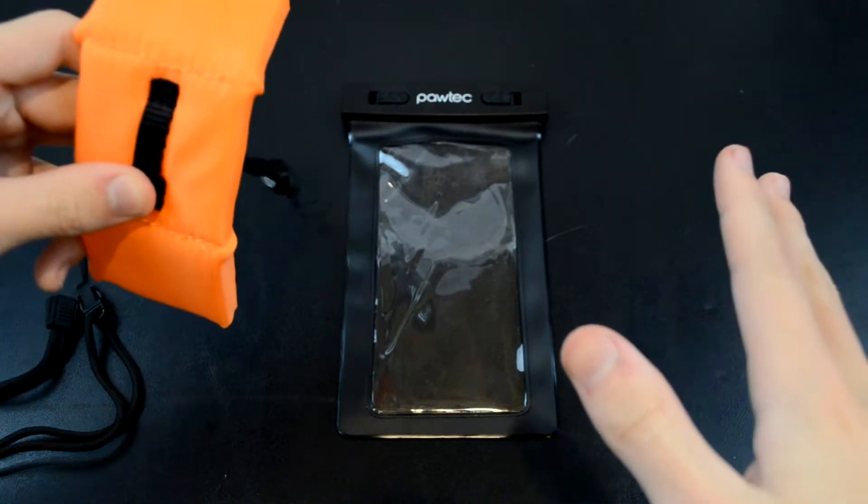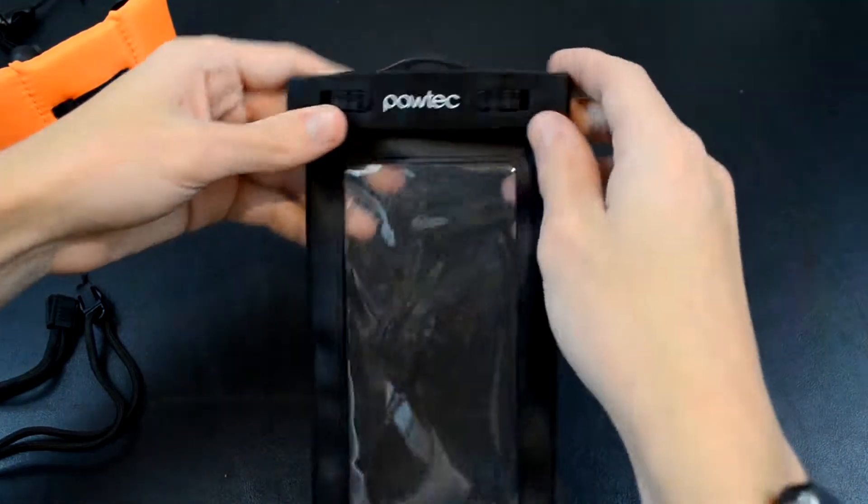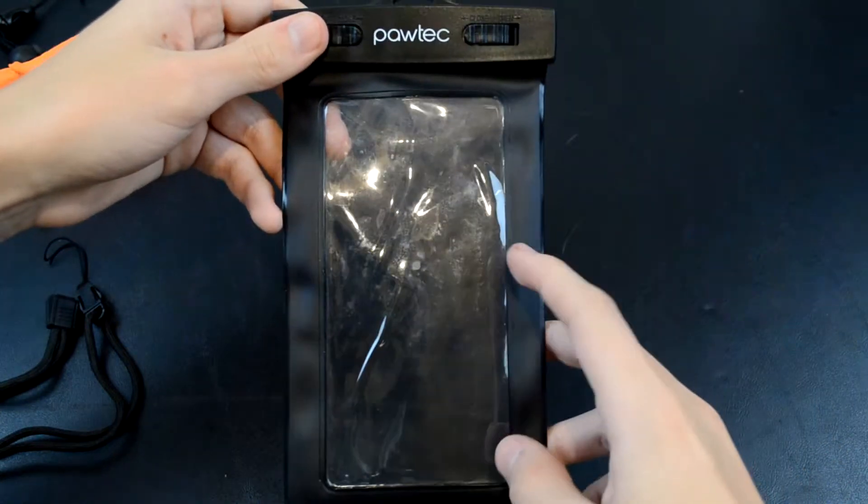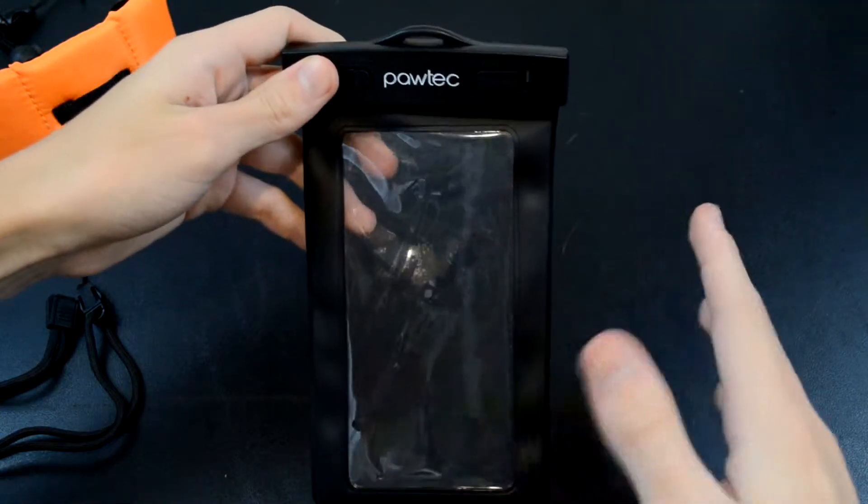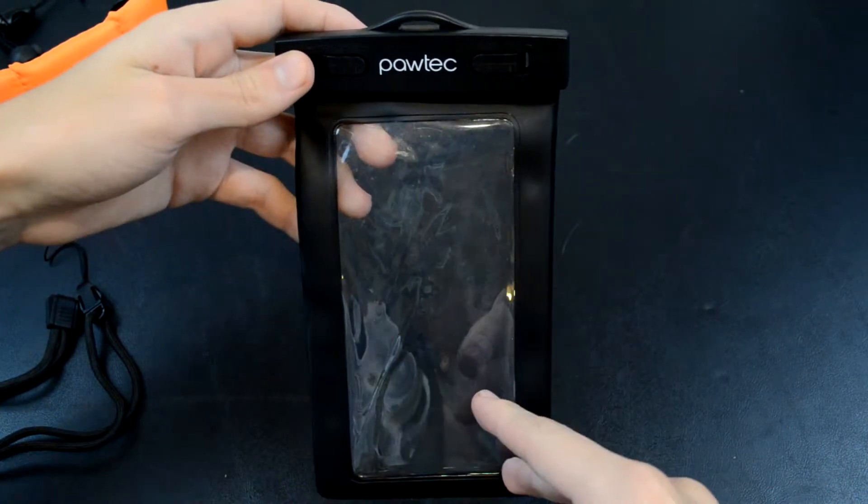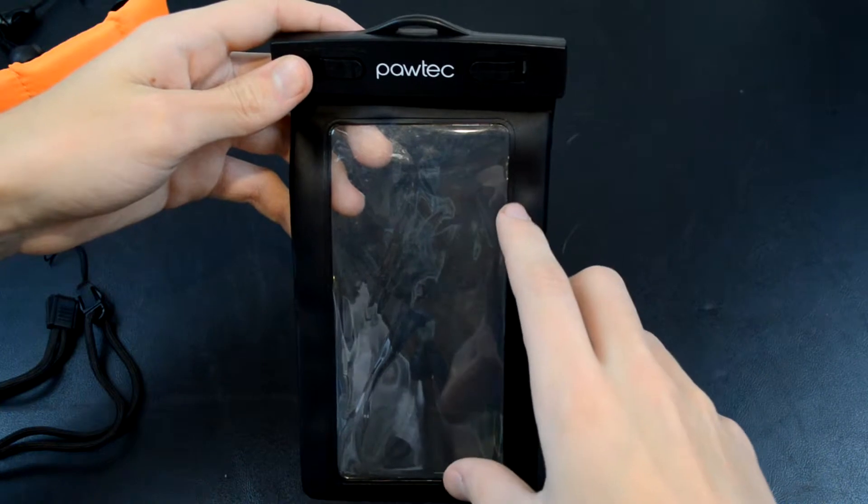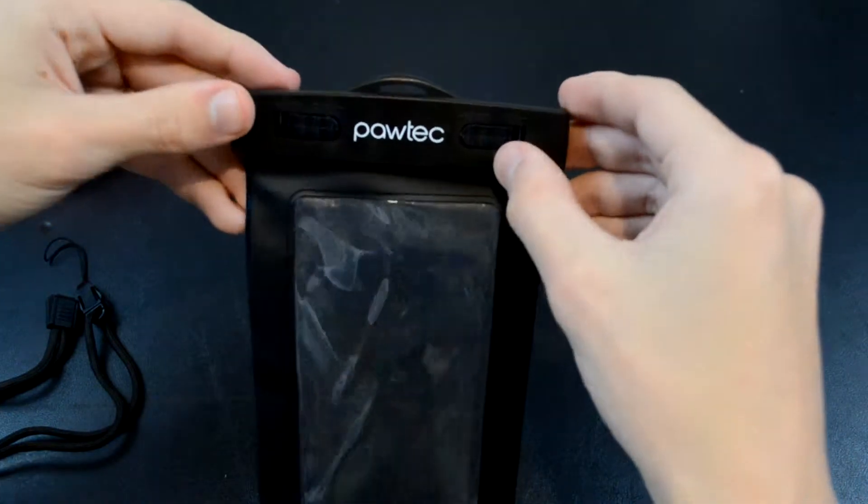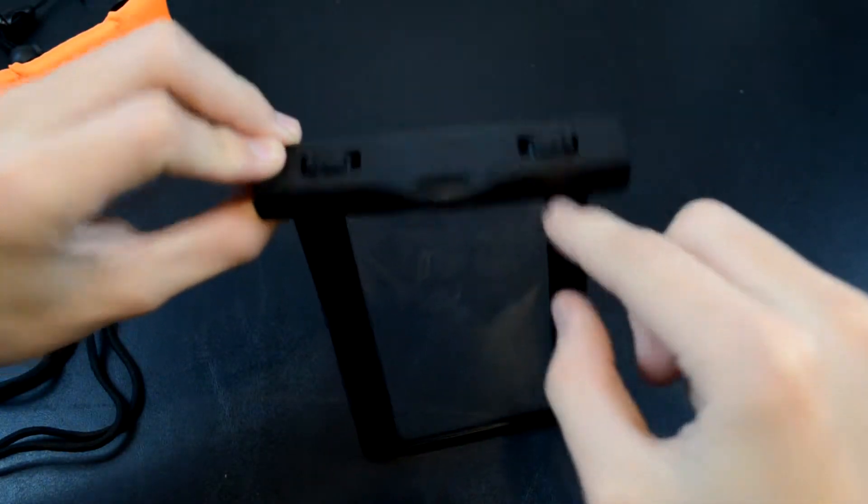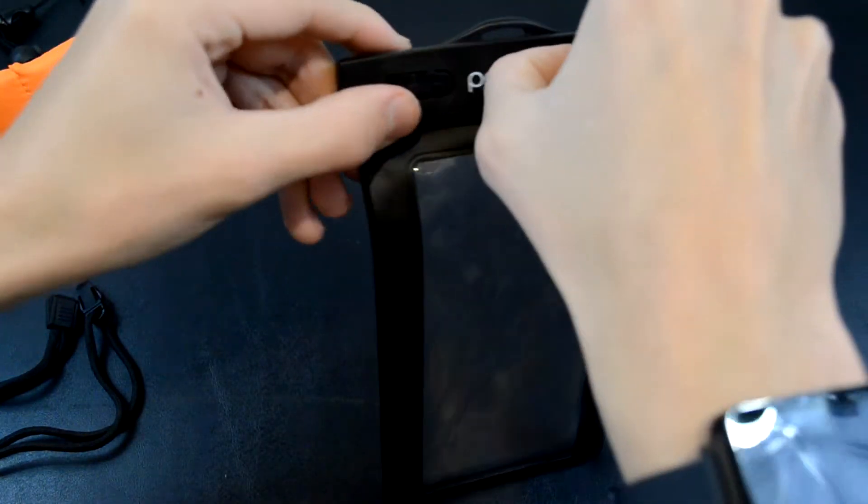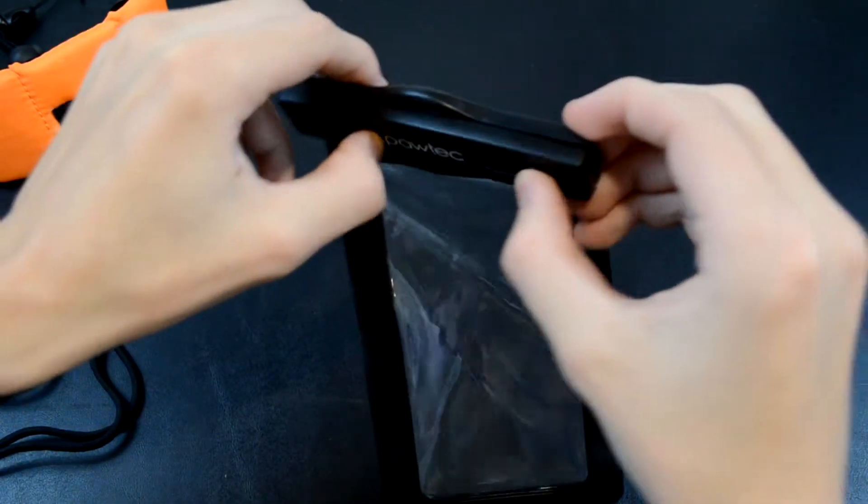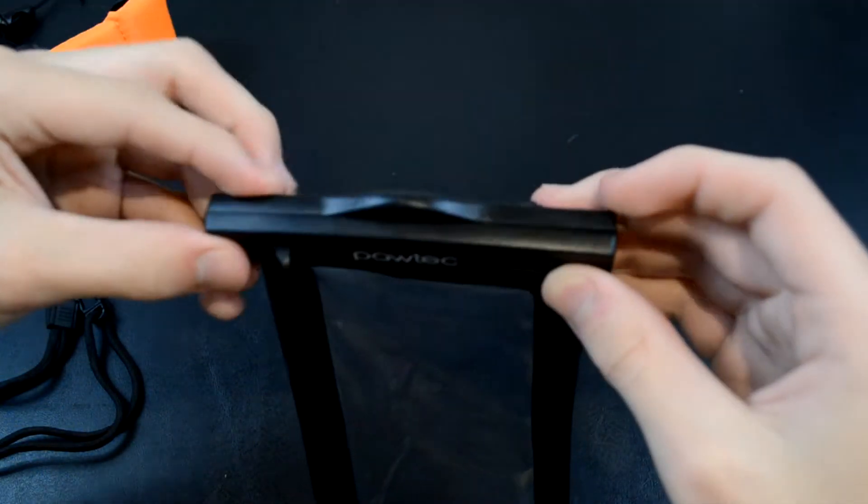Onto the actual pouch itself. This measures 4 by 7 inches, so as long as your device dimensions are below that, it will fit inside this bag. I'll demonstrate that right now. As you can see, it has double-sided snap locks right here. You just use your fingernails to open that up. Now you can see I've opened up the lock.